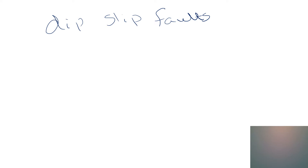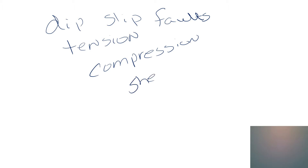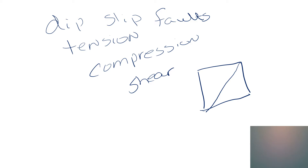When we see block diagrams like this, the first thing that we do is find the break. The break is easy to see because it's shown with a black line. Then we identify the hanging wall — the hanging wall is the rock above the break. If a diagram shows lines representing different rocks, we can look at how the rocks are displaced. Let's put some arrows on this one.